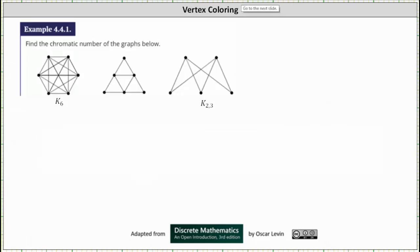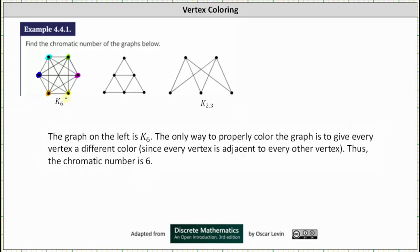We're asked to find the chromatic number of the graphs below. First, we have the complete graph K6. Notice every vertex is adjacent to every other vertex. If every vertex is adjacent to every other vertex and there are six vertices, we cannot get a proper coloring unless we color each vertex a different color. A proper coloring will take six colors, and thus the chromatic number is six.